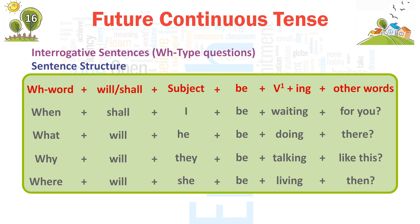Why + will + they + be + talking + like this? → 'Why will they be talking like this?' Where + will + she + be + living + then? → 'Where will she be living then?'